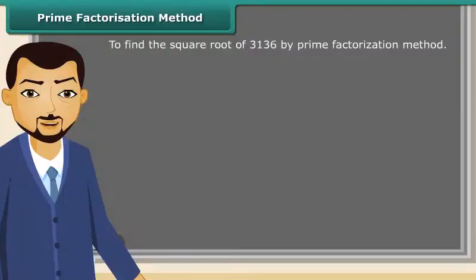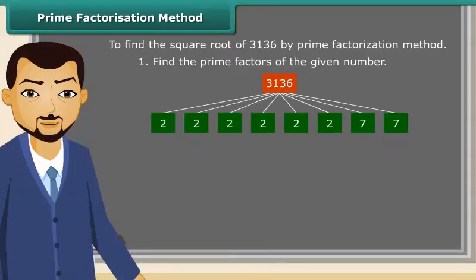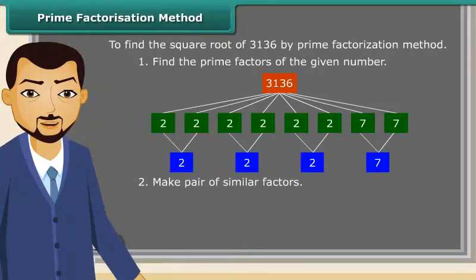Now we will try to find the square root of a number by prime factorization method by following some steps. First of all, find the prime factors of the given number. Now make pairs of similar factors.